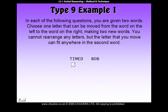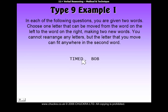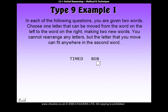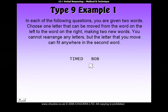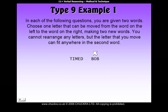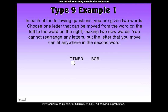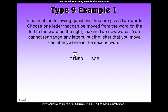In this particular question, we've been given the word 'timed' and 'bob.' What we have to do is move one of the letters from 'timed' over to a certain position within the word 'bob' to make a new word on the right. We must also make sure that the letter we remove from 'timed,' when it's been removed, leaves behind a real word on the left.